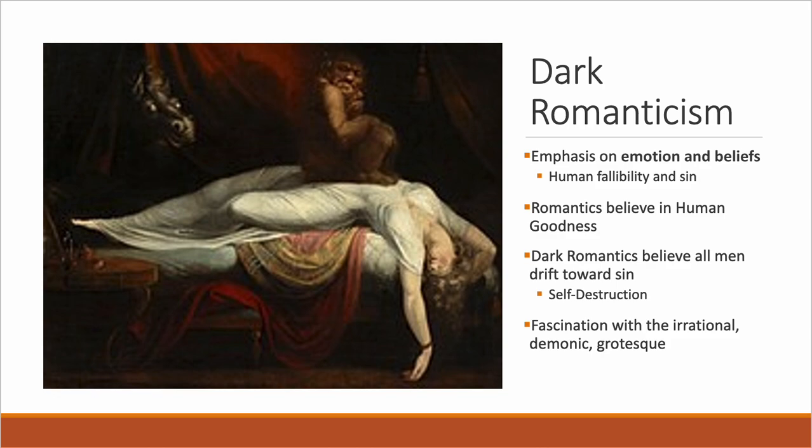An offshoot of Romanticism popular in the United States was dark Romanticism. Writers like Hawthorne and Poe were dark Romantics — their works are filled with a fascination with the irrational, the demonic, and even the grotesque. While Romantics believed in innate human goodness, dark Romantics believed all men inevitably drifted toward sin, and that even the best and most righteous of men was at risk of giving into darker impulses toward self-destruction.